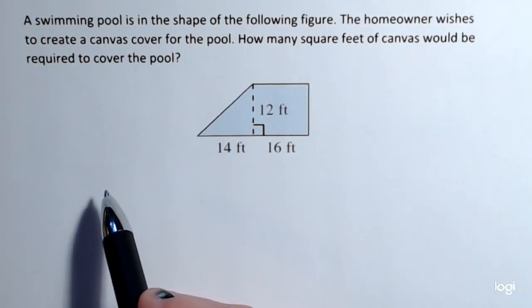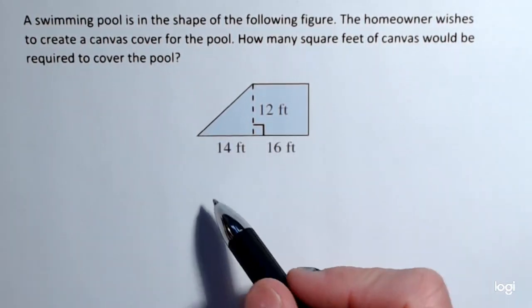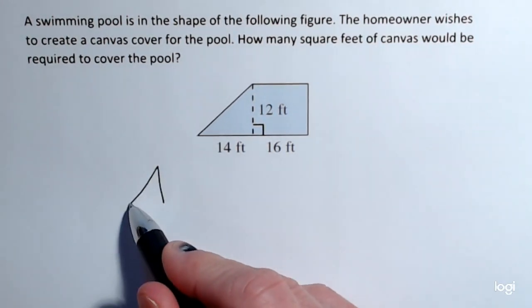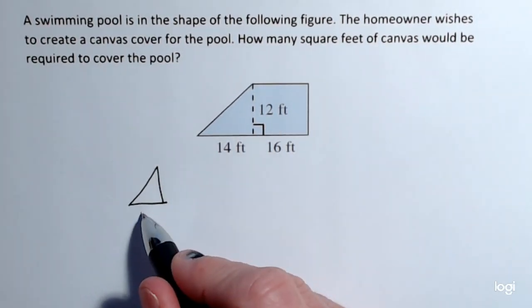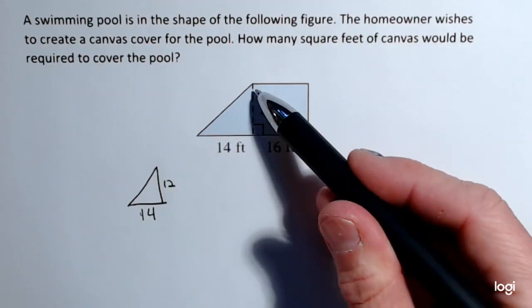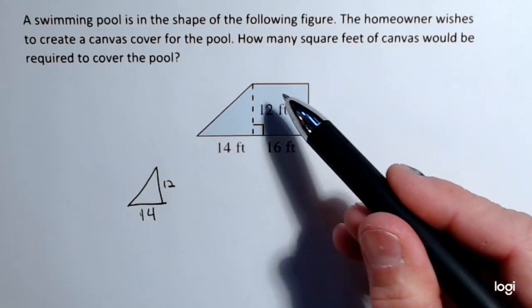So the first way, I've got two shapes here. I've got this right triangle with a base of 14 feet and a height of 12 because it's sharing a side with this rectangle.